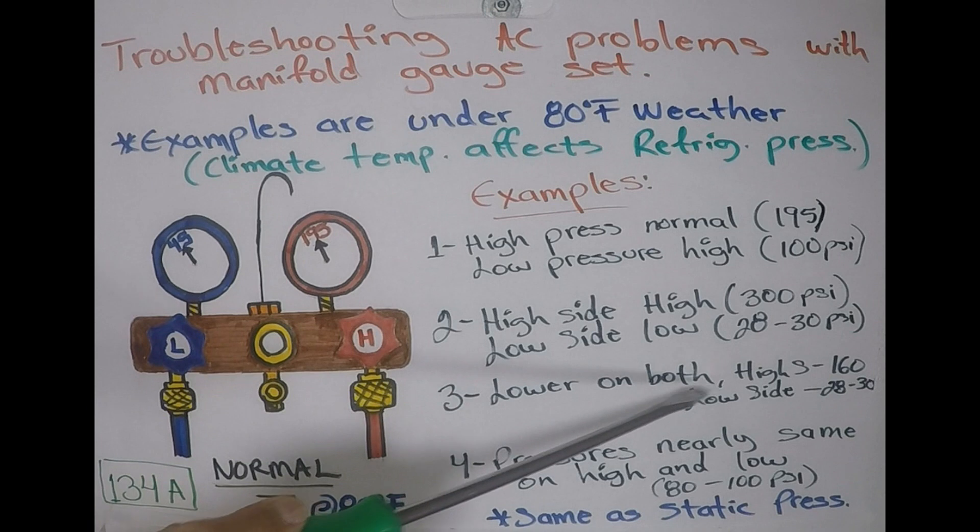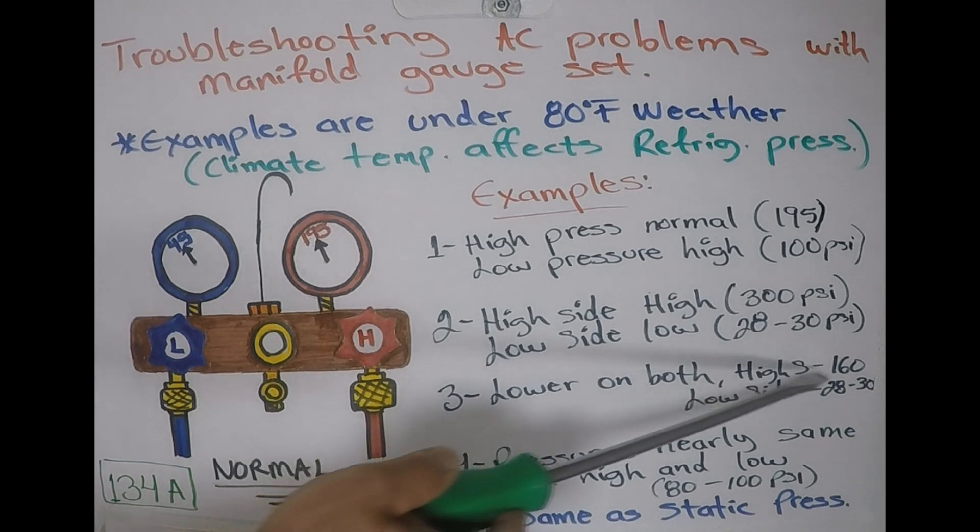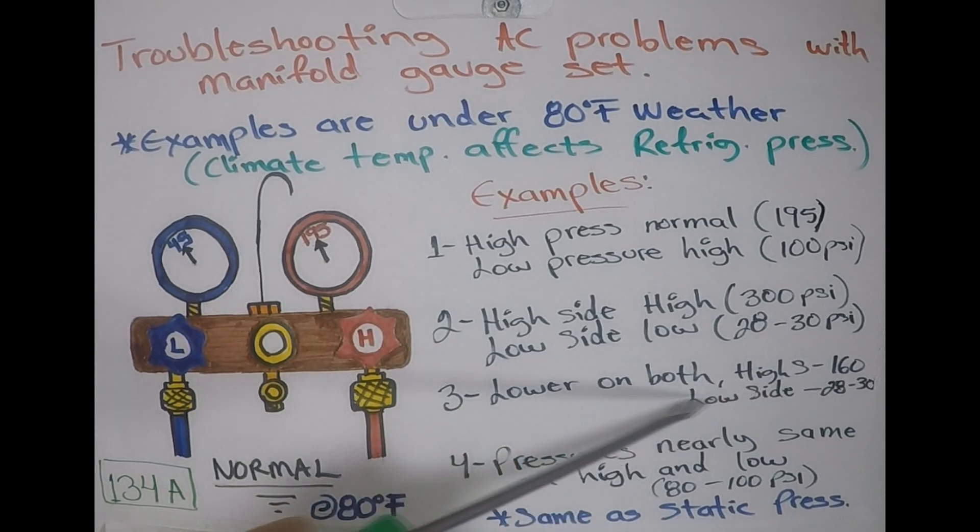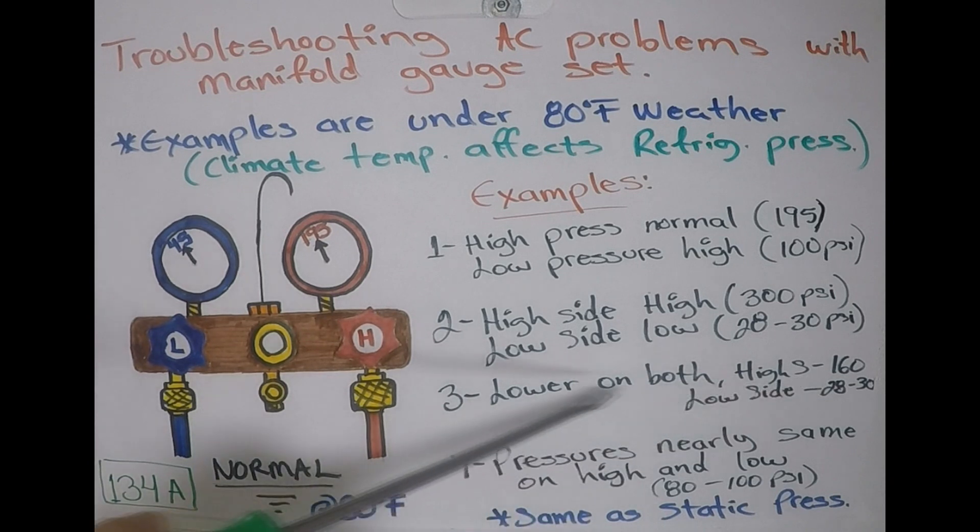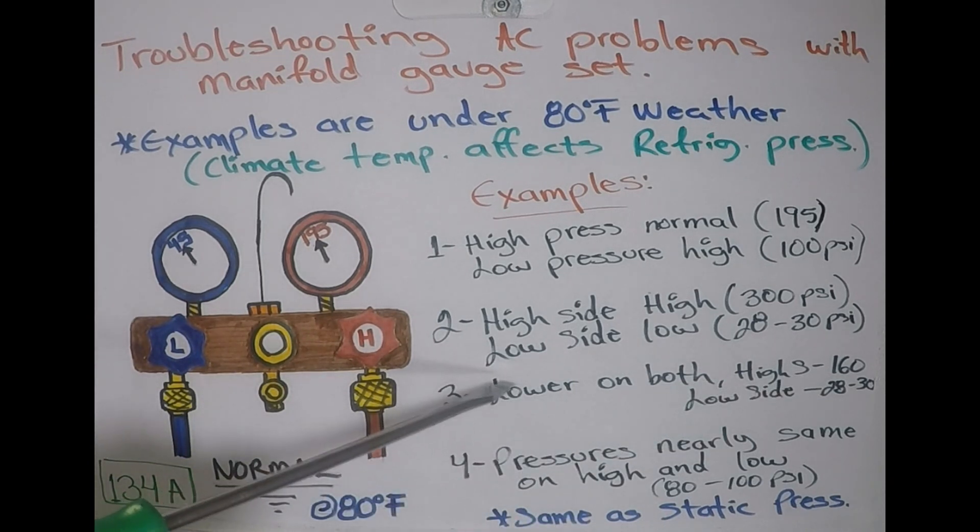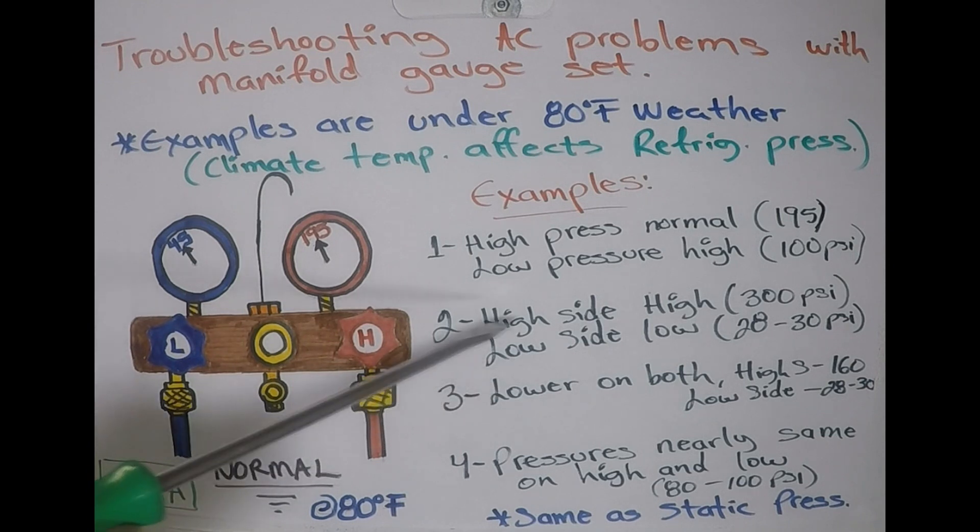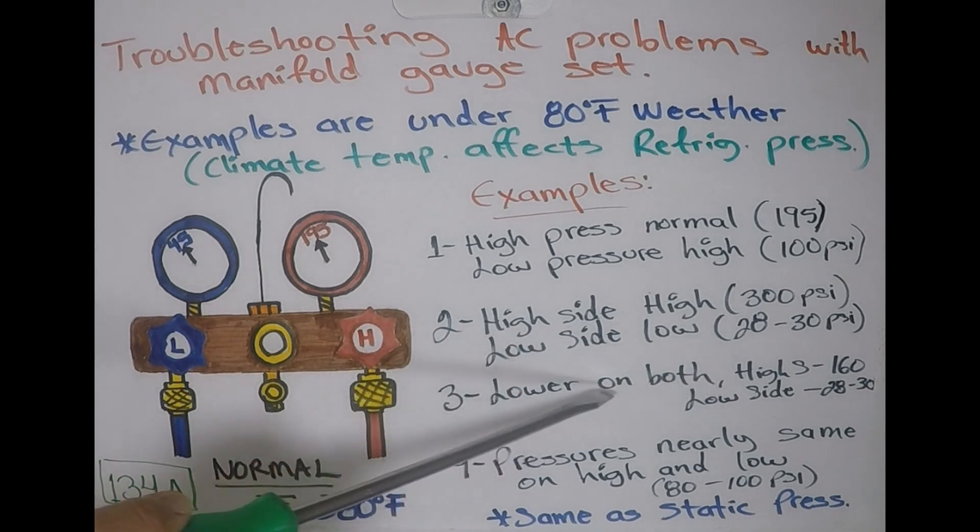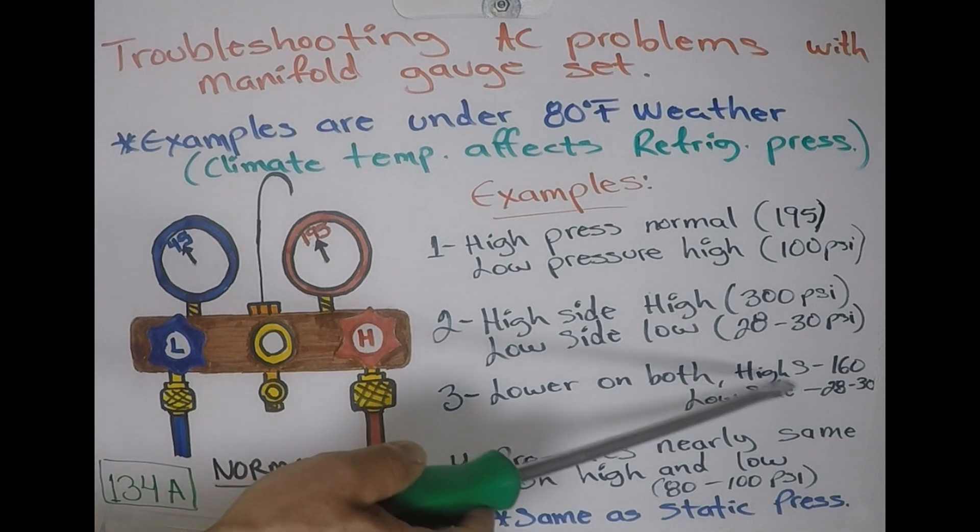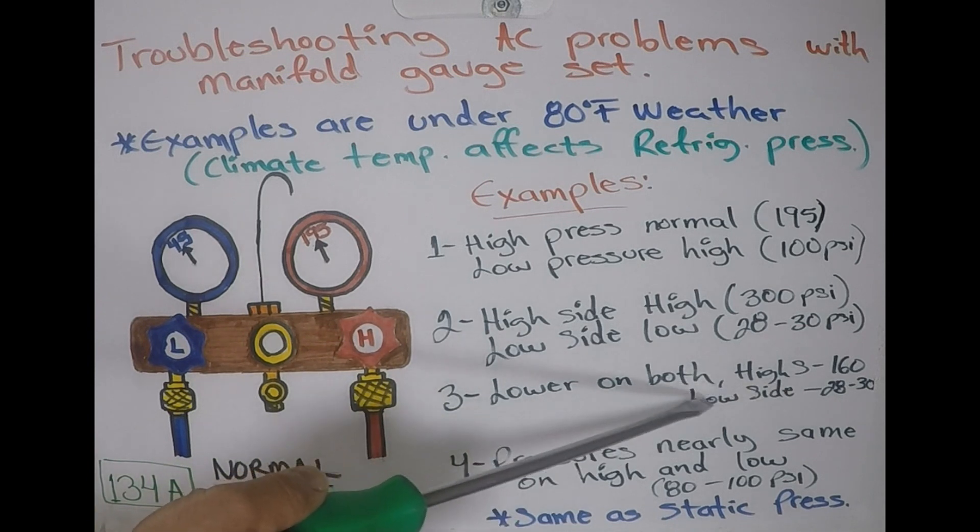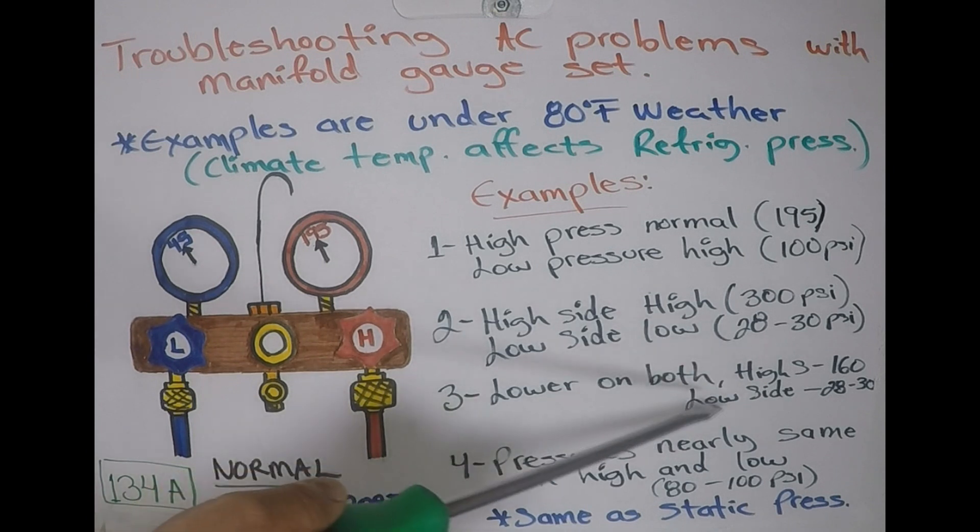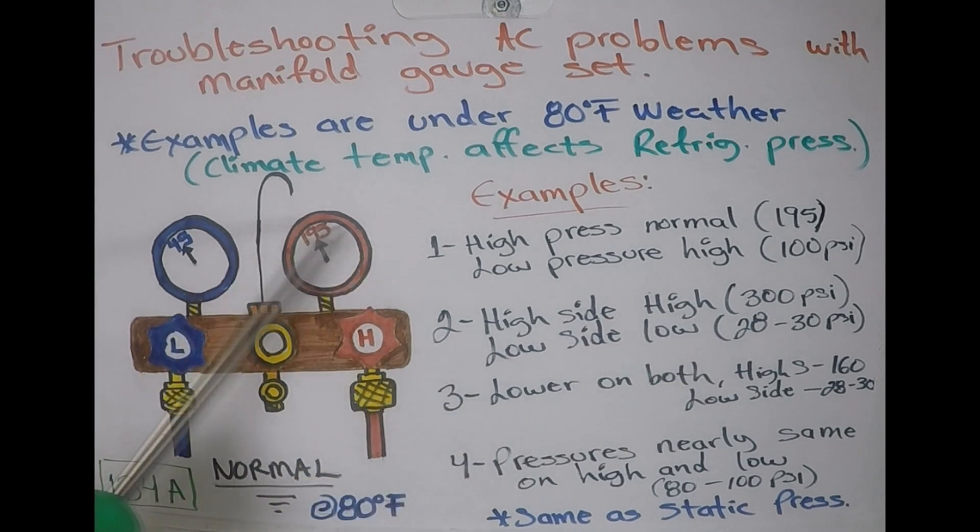Now let's go over example number three. Let's say that both of them are slightly low. The high side has about 160, and the low side is 28 to 30. This right here is more likely an indication of lower refrigerant level. Sometimes it may be low enough that the compressor may cycle on and off. If the low side starts dropping in the low 20s, this would cause the clutch to disengage. Then once the pressure builds up again, it would engage again, and the pressures could fluctuate.